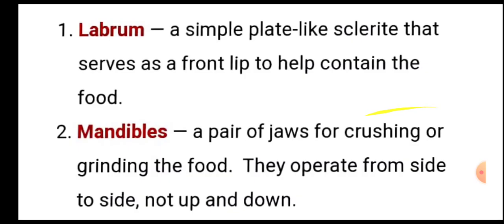First: labrum — a simple plate-like sclerite that serves as a front lip to help contain the food। यह सरल plate-like sclerite है जो front lip की तरह काम करता है और भोजन को अंदर रखने में help करता है। Second: mandibles — a pair of jaws for crushing or grinding the food। ये एक जोड़ी जबड़े हैं जो भोजन को crush या grind करते हैं। They operate from side to side, not up and down।